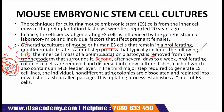In the second step, after several days to a week, proliferating colonies of cells are removed and dispersed into new culture dishes, each of which also contains a MEF feeder layer. In the third major step required to generate embryonic stem cell lines, the individual non-differentiating colonies are dissociated and replated into new dishes — a step known as passage. This replating process establishes a line of embryonic stem cells.